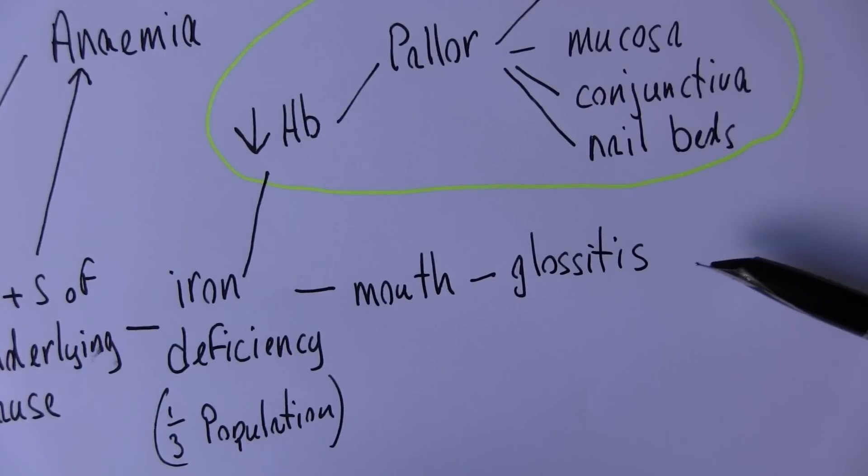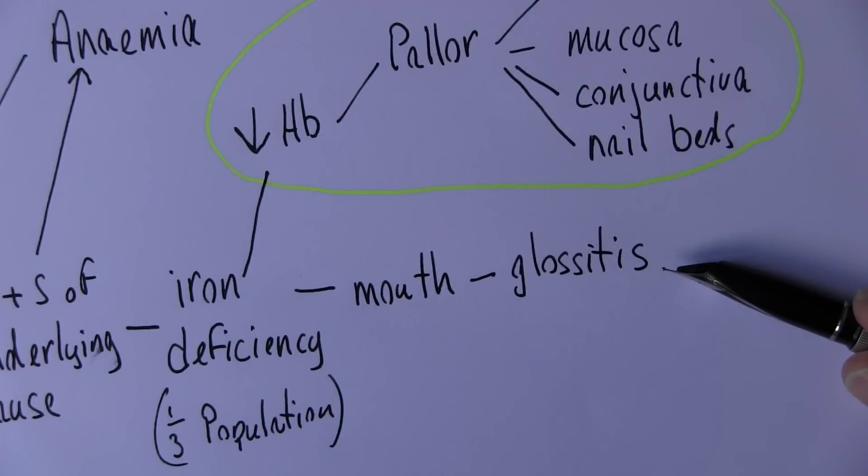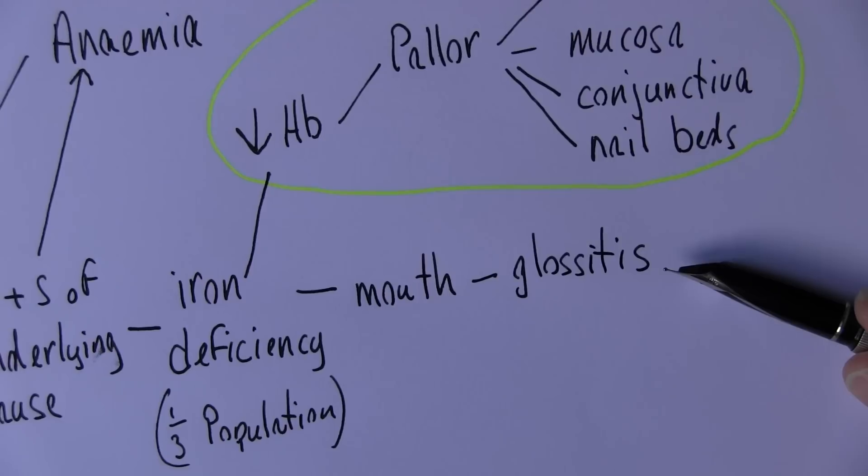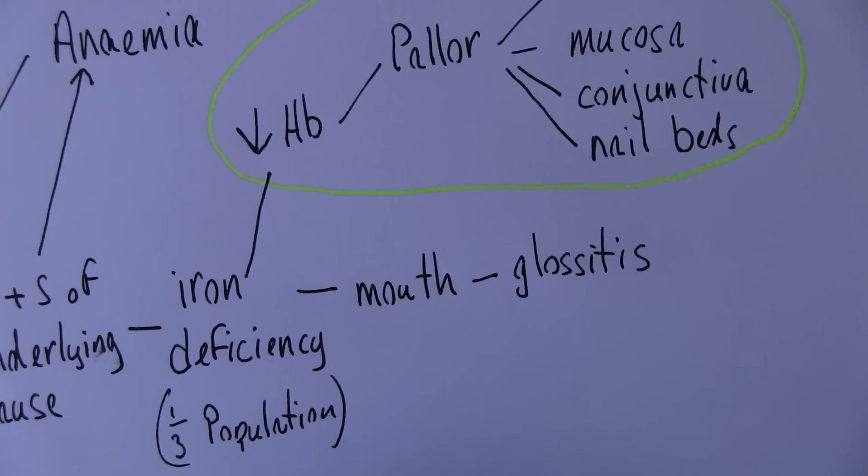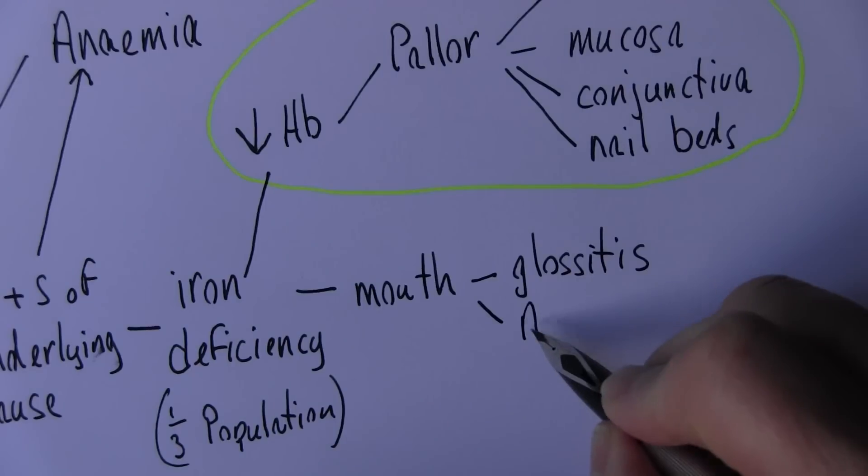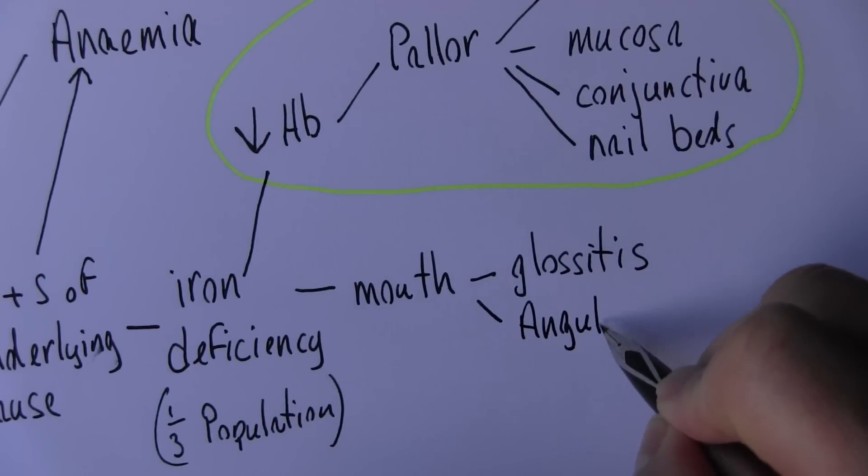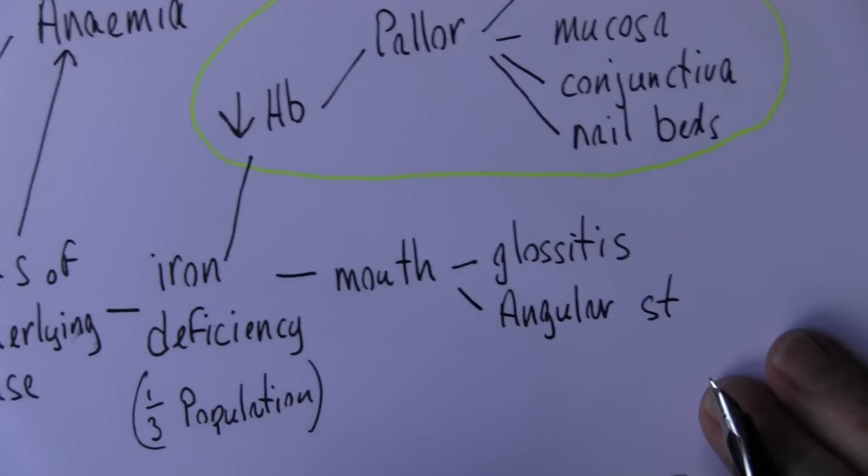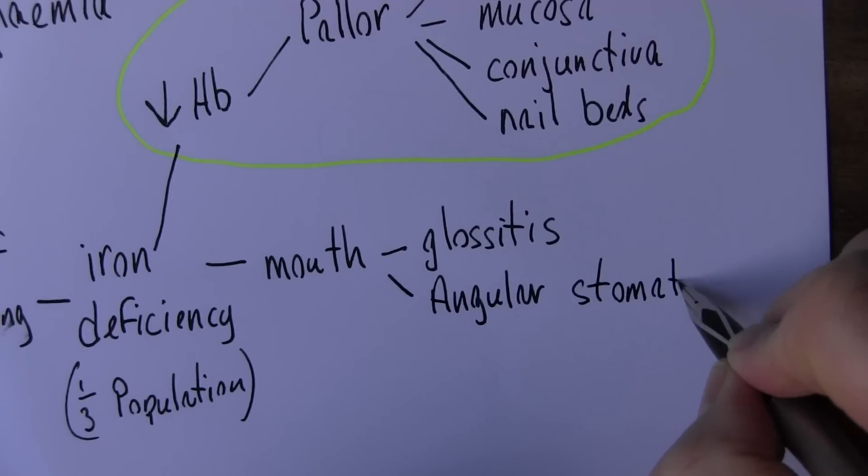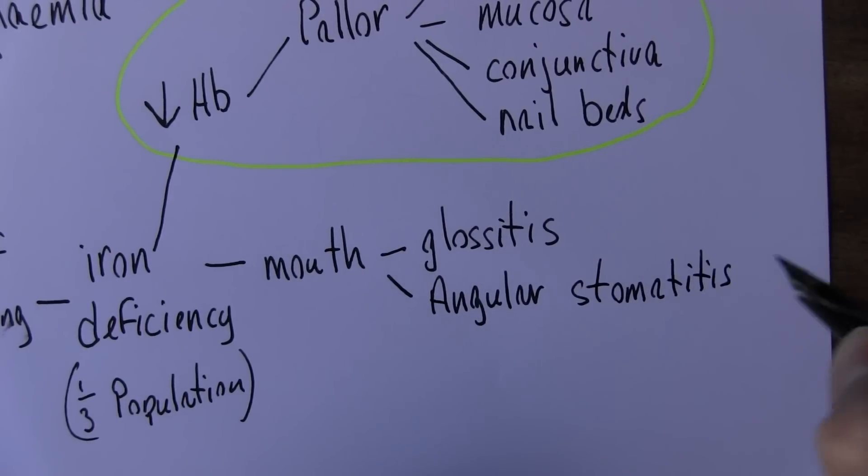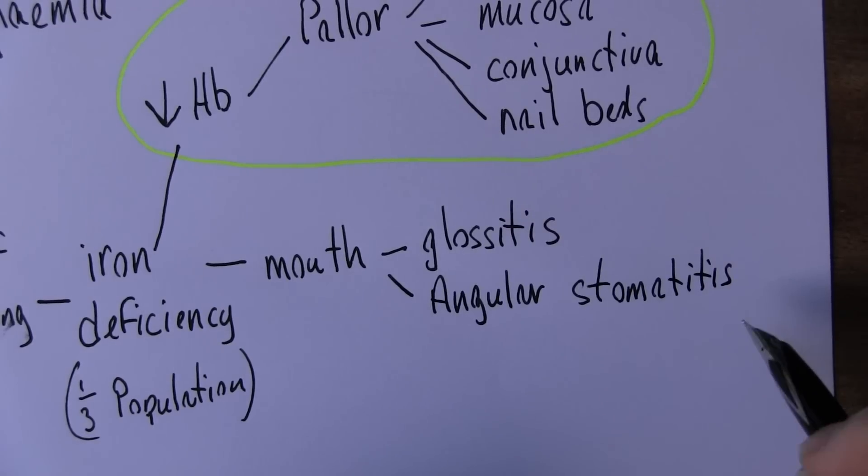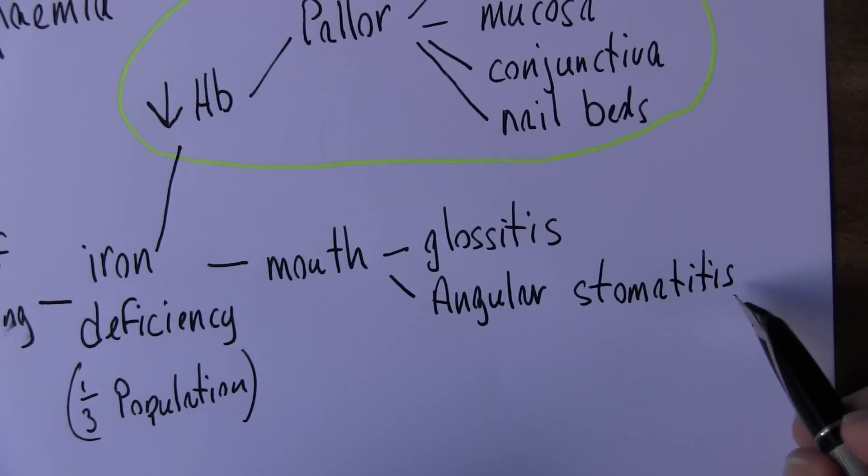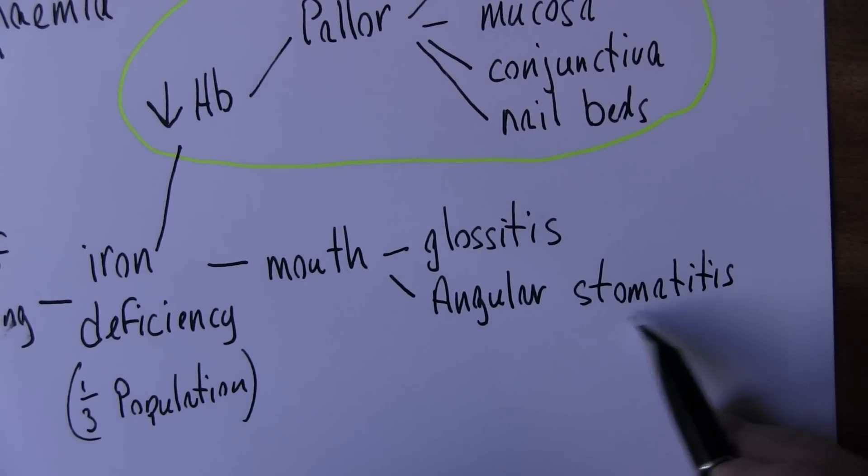Now glossitis is inflammation of the tongue. The tongue can look inflamed and it feels sore. The patient complains of a sore tongue. And another feature relating to the mouth is angular stomatitis.